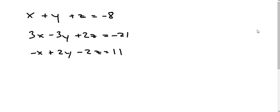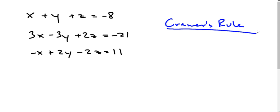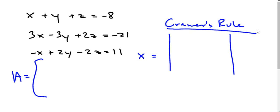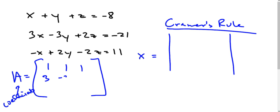So we have x, y, and z — three variables. In using Cramer's Rule, we can solve this many different ways: elimination, substitution, and others. With Cramer's Rule, we're going to find determinants. The first thing I do is find the coefficient matrix A. Our coefficient matrix has the values 1, 1, 1 for the first row; 3, -3, 2 for the second; and -1, 2, -2 for the third. We have x's, y's, z's, and then the solution column.